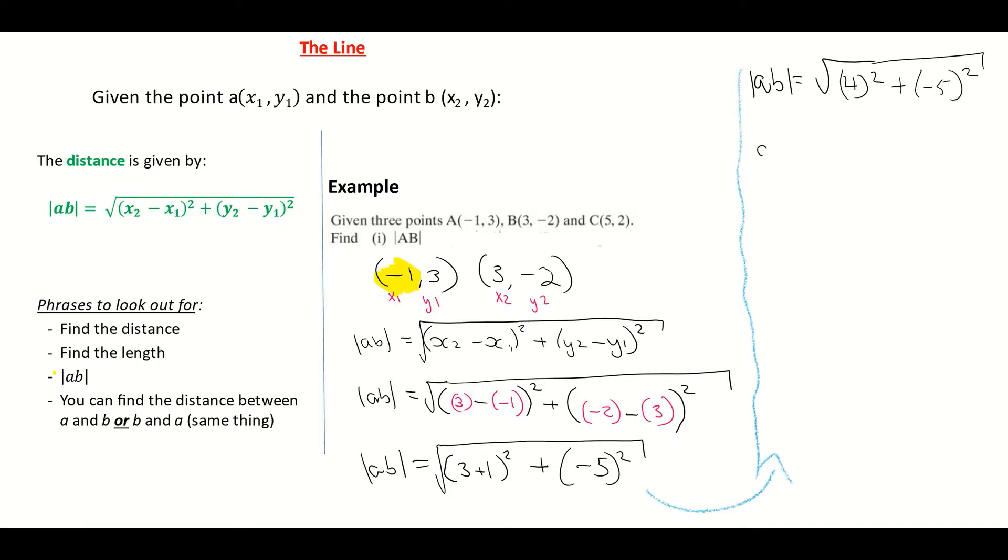I then evaluate that. 4² is 16. -5 by -5 is giving me positive 25. If you're using a Casio calculator, just make sure that you're using brackets on your calculator. So that's why I'm using brackets throughout the whole question.